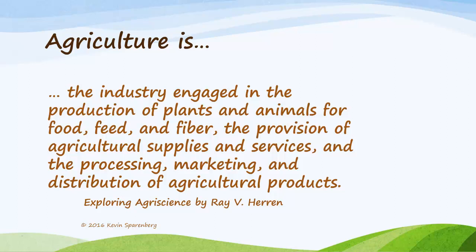I found a definition of agriculture that I like best. I found it in the textbook titled Exploring Agriscience by Ray Heron, a textbook designed for middle school students. Dr. Heron defines agriculture as the industry engaged in the production of plants and animals for food, feed, and fiber, the provision of agricultural supplies and services, and the processing, marketing, and distribution of agricultural products. Let's take a deeper look at what those words mean.